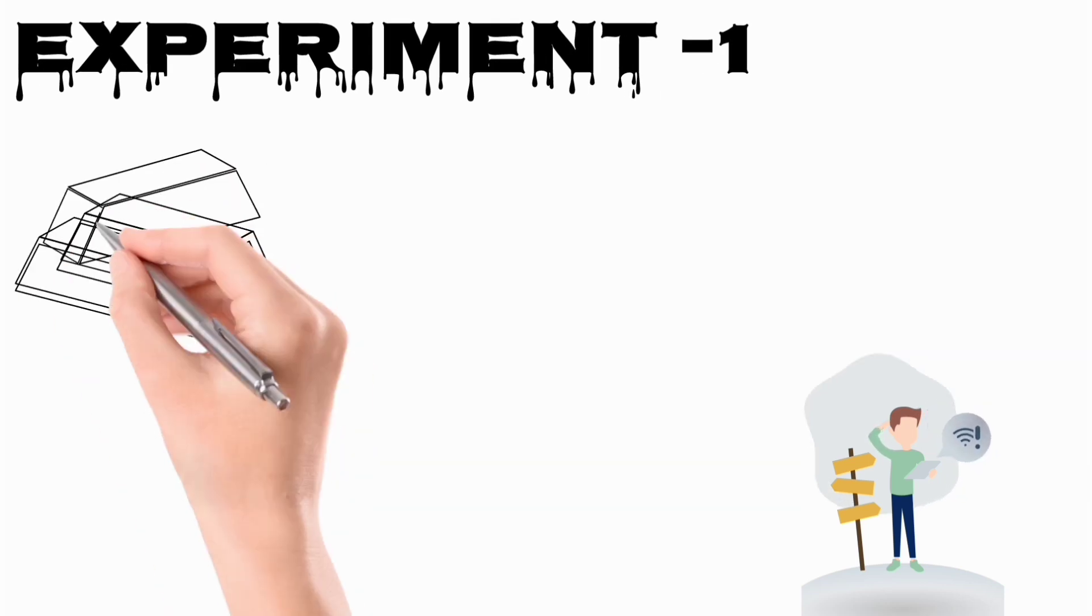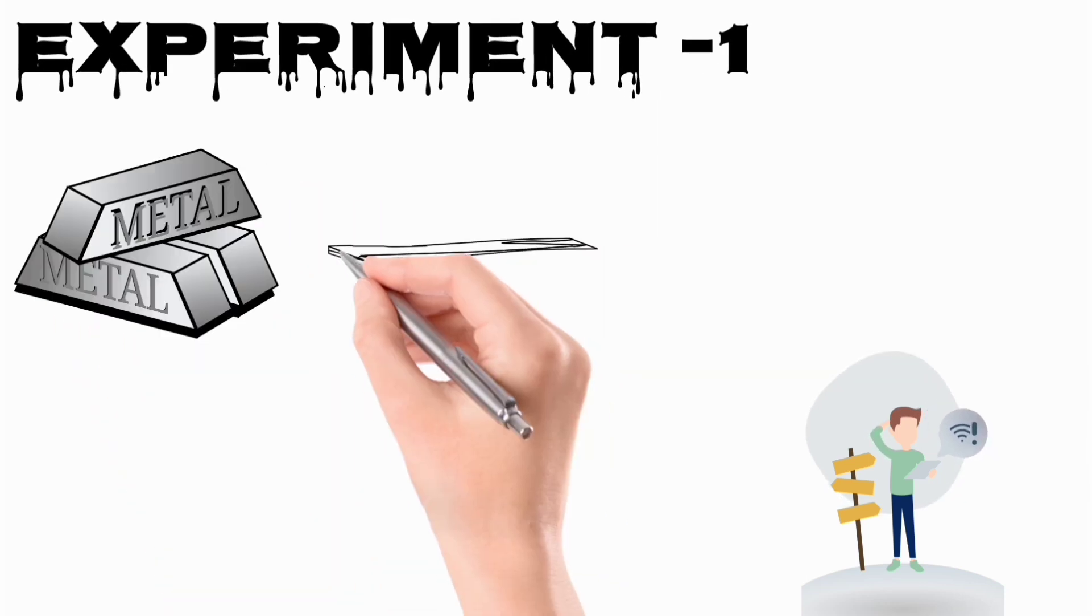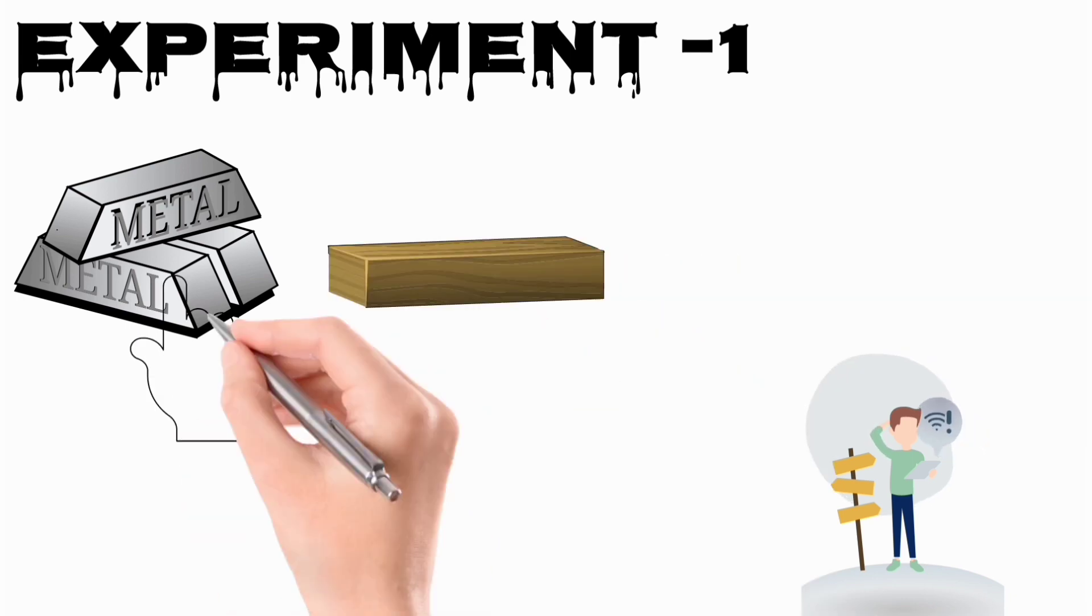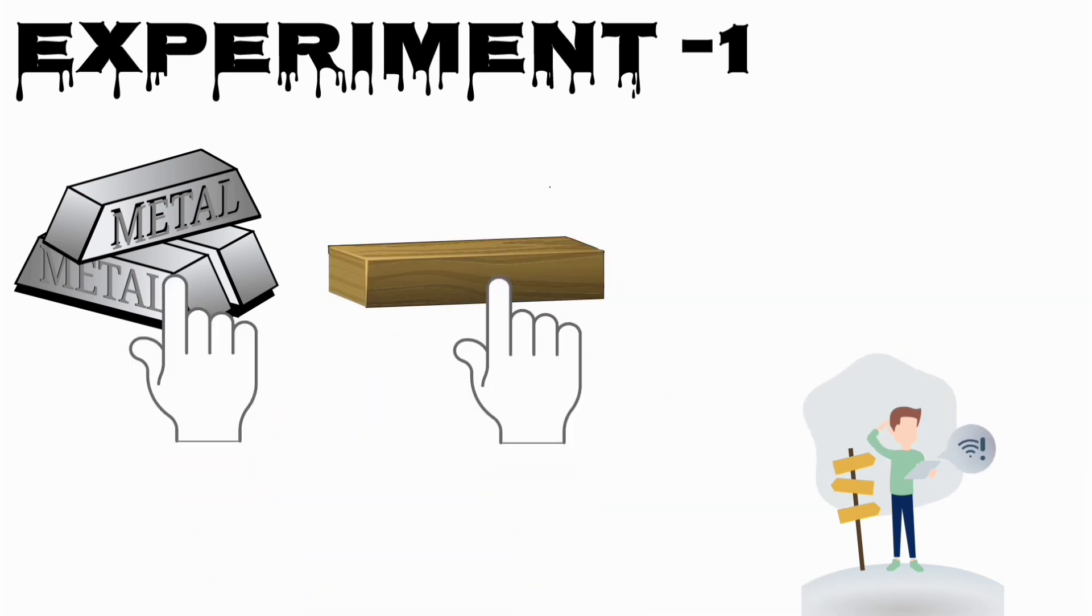Now take two blocks, one made up of iron and another of wood. Now touch both of them together. What did you feel? Did you feel iron is colder than wood? So it means iron is colder than wood.